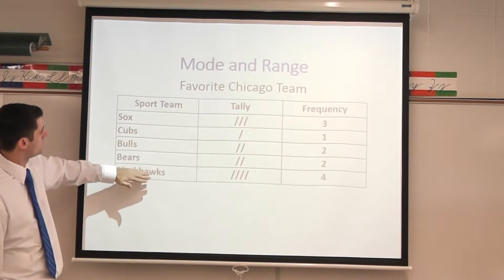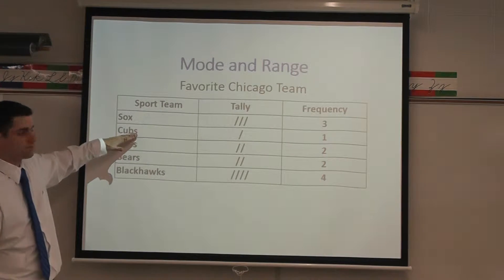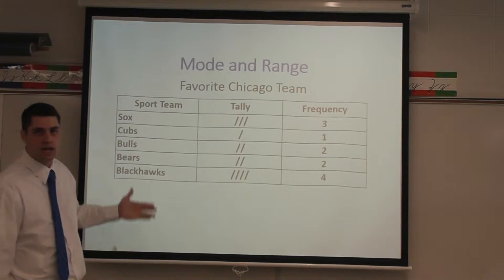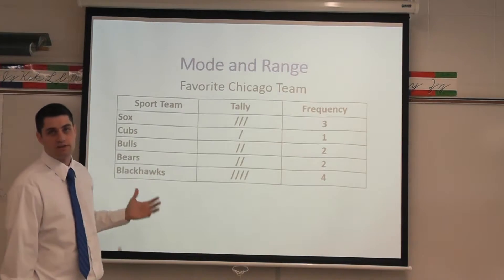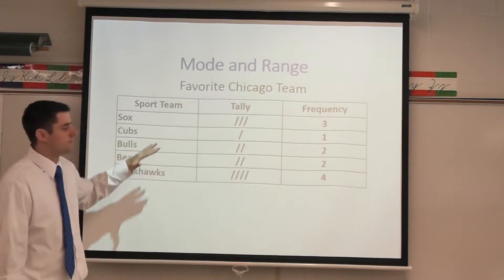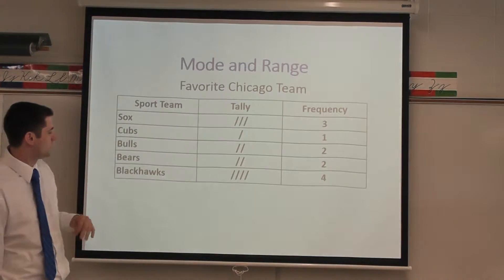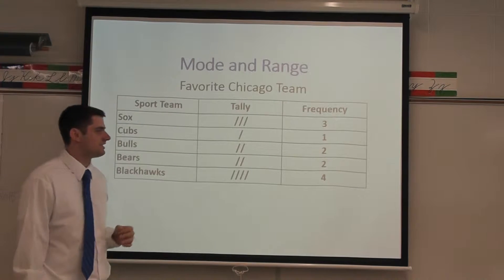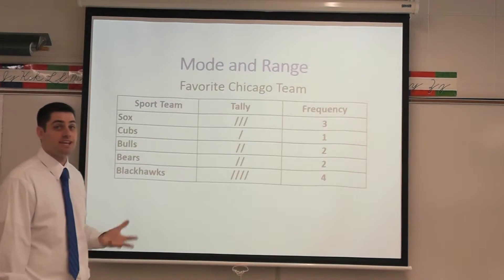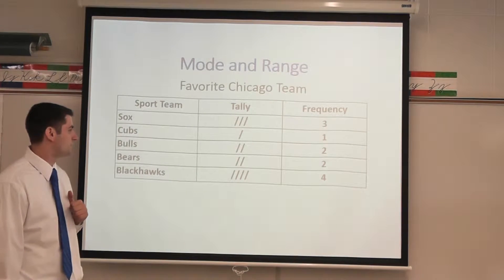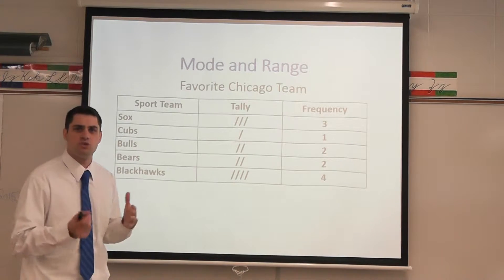Looking at our sports teams here, no surprise the Cubs only have one vote — we all know that the Sox are definitely better than the Cubs, so that should maybe not be so surprising to us. The Blackhawks have the highest with four, maybe being the Stanley Cup champions helped them out a little bit there. But let's get into the range.